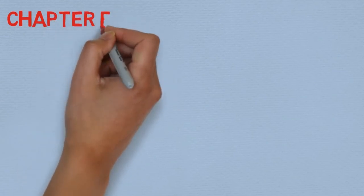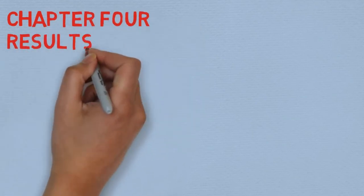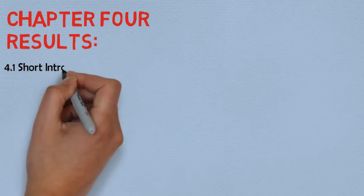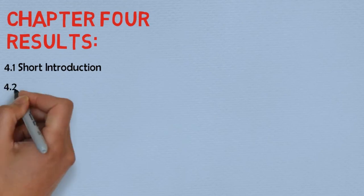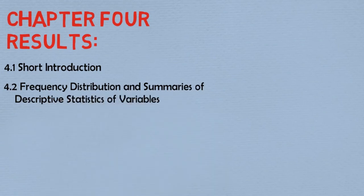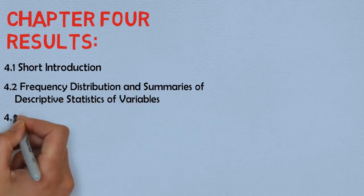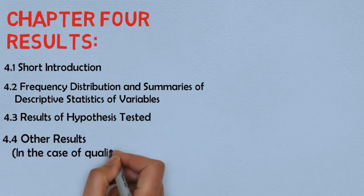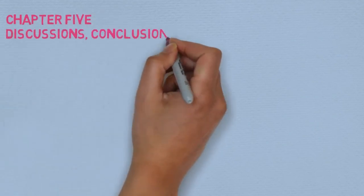In chapter 4 of the protocol we have the results. First, include a short introduction of the study, because a reader at this level might have forgotten the purpose of the research, so it is important to restate it briefly. Secondly, include the frequency distribution and summaries of the descriptive statistics of the variables. Next, include the results of the hypotheses tested, and finally include any other results obtained in the process of the research study. Chapter 5 contains the discussion, conclusion, and recommendation.